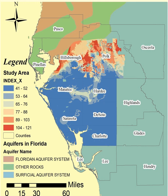The significance of the DRASTIC summary index score is that it shows areas more prone to contamination. As a result, state or local authorities will place necessary measures to prevent or mitigate contamination of the water supply. Using GIS, a map was developed for seven counties — Hillsborough, Polk, Manatee, Hardee, Sarasota, DeSoto, and Charlotte in Florida — showing the DRASTIC summary index score for the Floridan aquifer system, the surficial aquifer system, and other rock aquifers. The developed map is a combination of multiple layers stacked on top of each other, as shown in Figure 1.